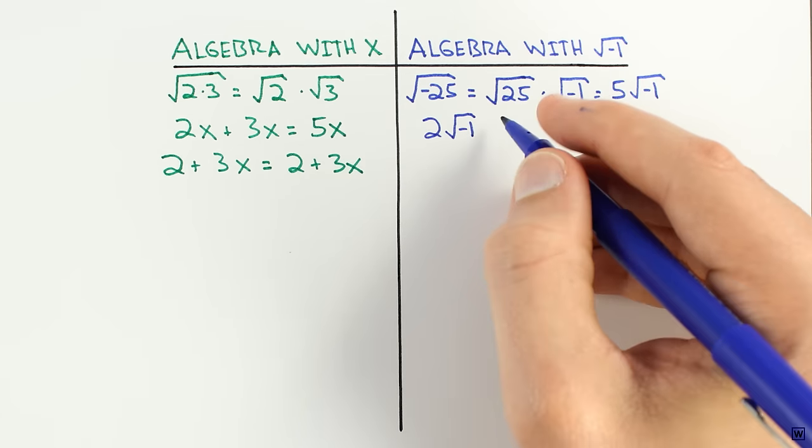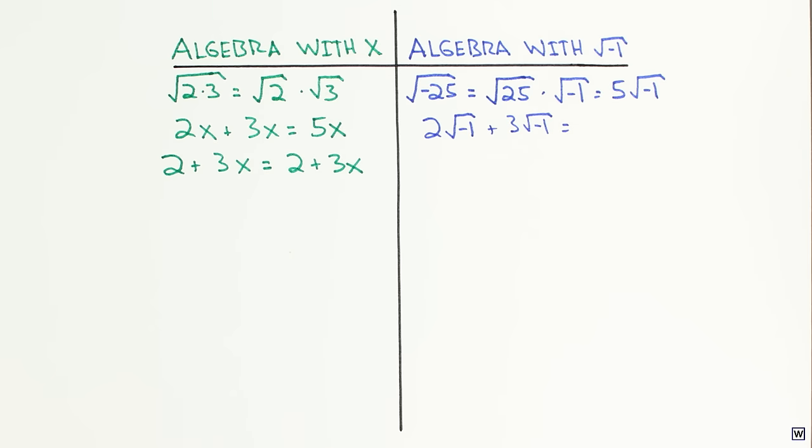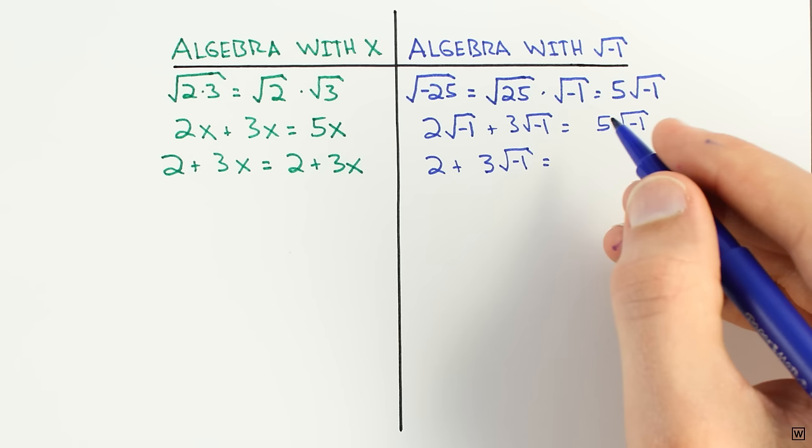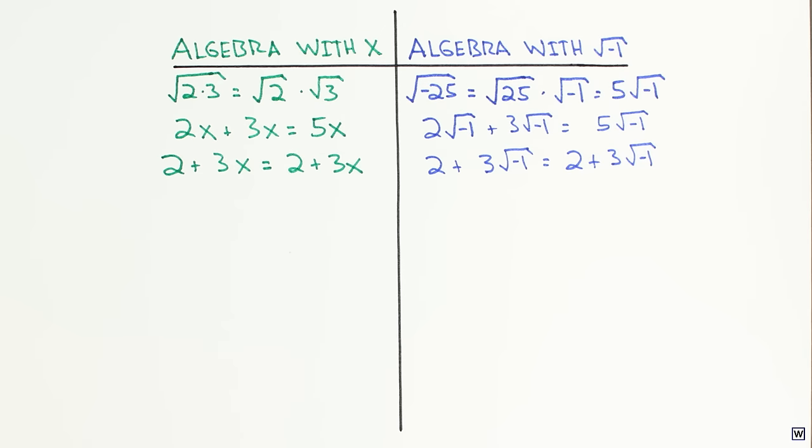Likewise, 2 square roots of minus 1 plus 3 square roots of minus 1 is equal to 5 square roots of minus 1, but 2 plus 3 square roots of minus 1 is just 2 plus 3 square roots of minus 1.